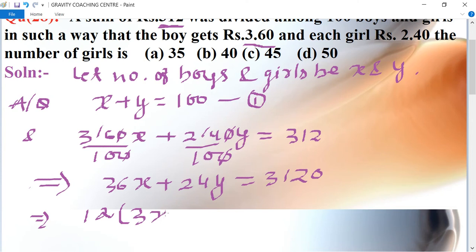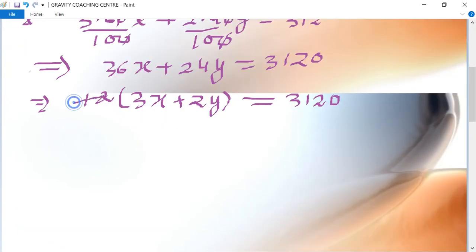Divide by 12. 3120 divided by 12 is 260, so we get 3x + 2y = 260. This is the second equation simplified.